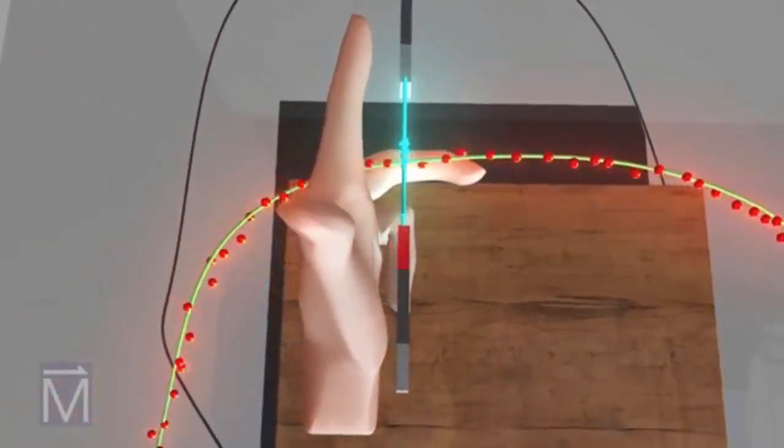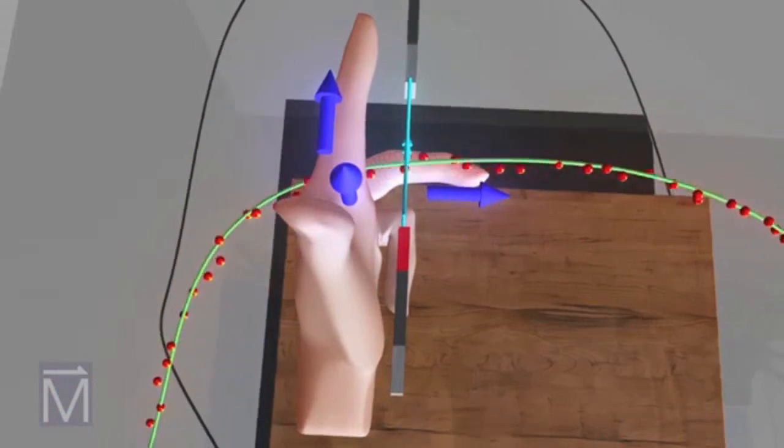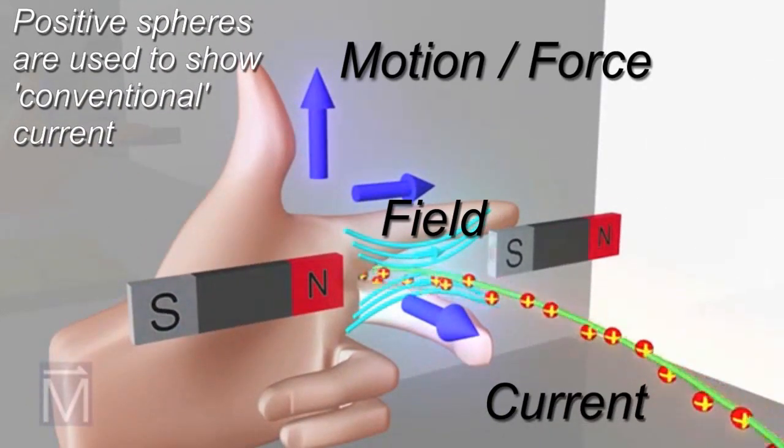Position your left hand like so, with your index finger pointing in the direction of the magnetic field, your middle finger pointing in the direction of the current, and your thumb pointing up, forming a right angle with your index finger.